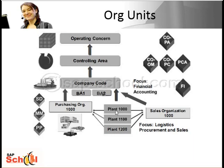Then you have plants, which is the standard central org unit in materials management, and you have the purchasing org, which is an org unit used in materials management. And the sales org, which is a key unit in sales order management. Both the purchasing and sales org units are important for management accounting because this data needs to be included for integral business processes between logistics and accounting.